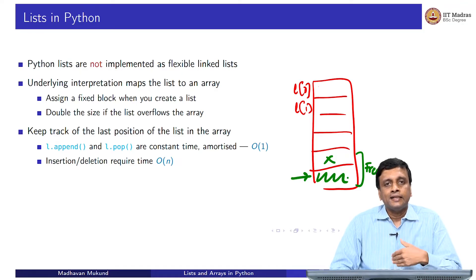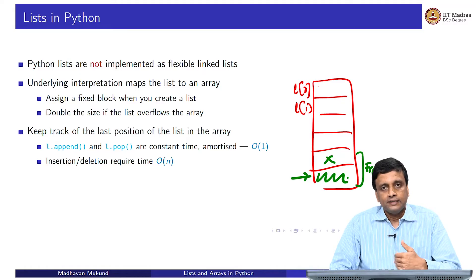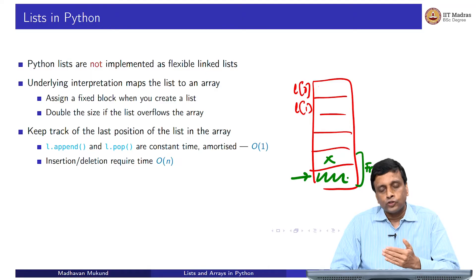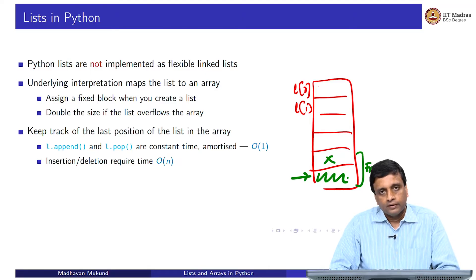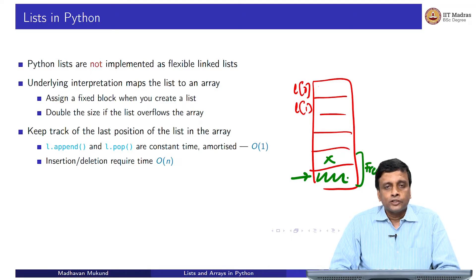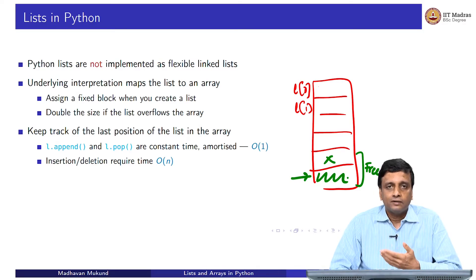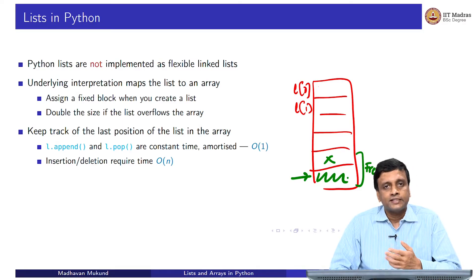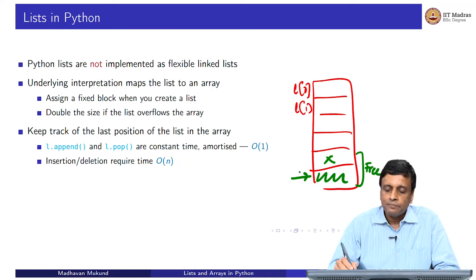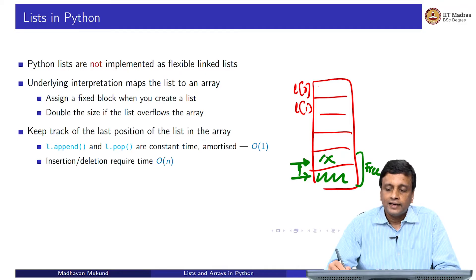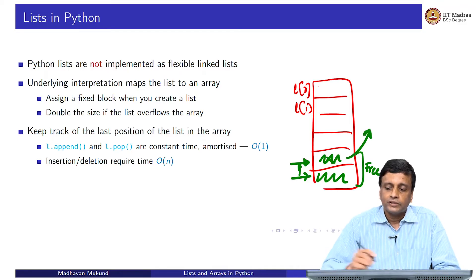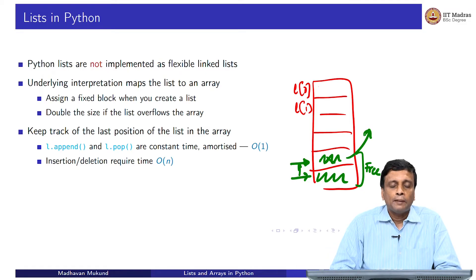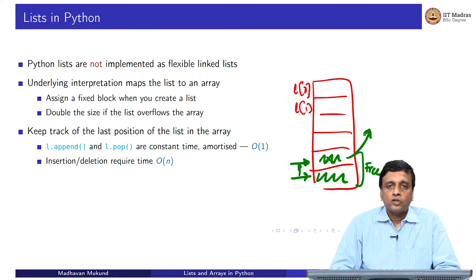Extending a list in Python by adding an element to the right is easy, provided you do not overflow that boundary. Python also provides an operation called pop which returns the last element. It removes the last element and then returns it back to you and shrinks the array by 1. It is also easy because I just had to move this pointer up, declare this to be free and return whatever was there as the return value. So append and pop are constant time.